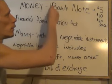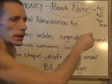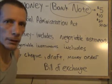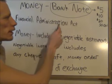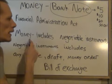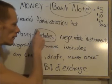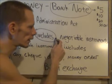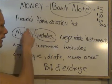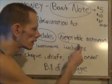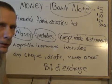Money is a bank note — $5, $10, $20, $50, $100, and so on. In the Financial Administration Act, it states that money includes negotiable instruments. Notice it says 'includes.' It includes negotiable instruments, so money is any negotiable instrument. That constitutes money. It's not just dollar bills in your pocket.